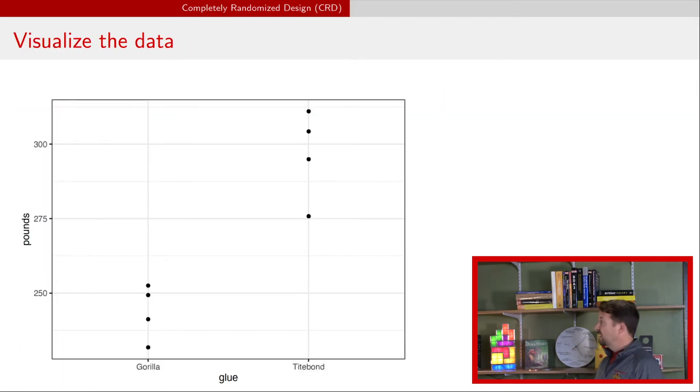This is an example of what these data might have looked like and so we can see very quickly that it looks like Gorilla does not provide as much support as the Titebond in terms of the weight that's put on these pieces of wood before they break.